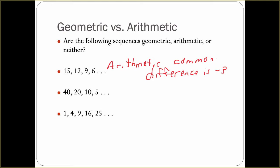For the next one, we have 40, 20, 10, and then 5. We are definitely not adding or subtracting the same number every time. We could see if we have a common ratio.